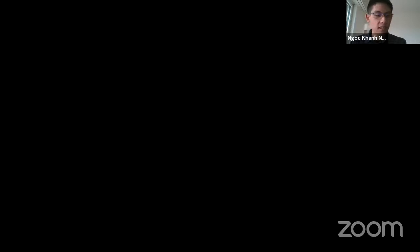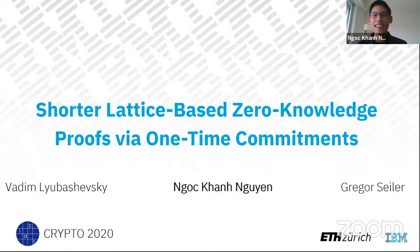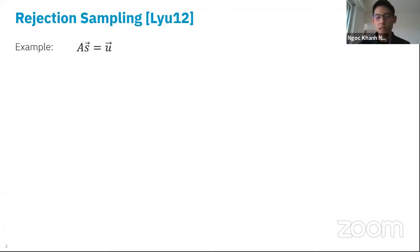Hi, my name is Khanh. I'm a PhD student at IBM Research Zurich and ETH Zurich. Today I'm going to talk about shorter lattice-based zero-knowledge proofs via one-time commitments. This is joint work with Vadim Lubashevsky and Gregor Seiler. Let's start with rejection sampling, which was mentioned in the previous talk. It is used in many lattice-based zero-knowledge proof protocols to ensure the zero-knowledge property.